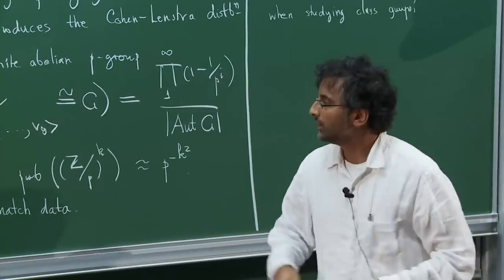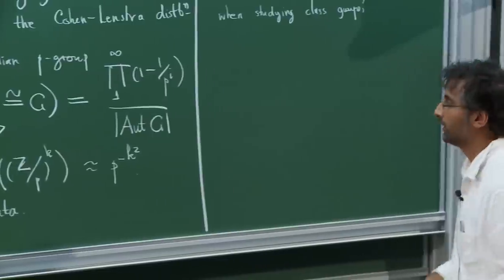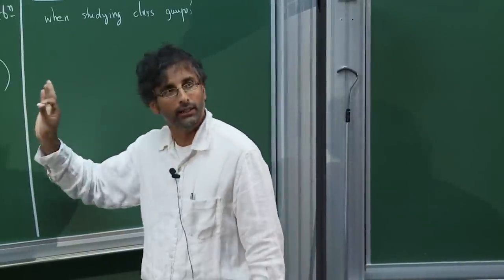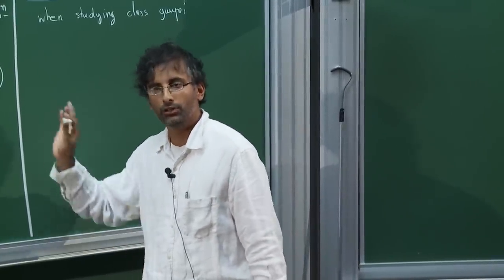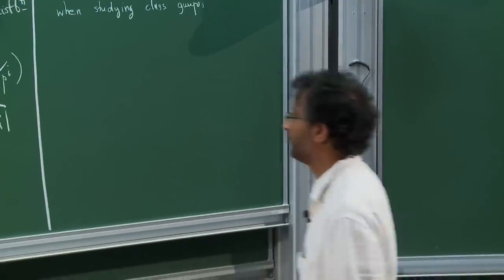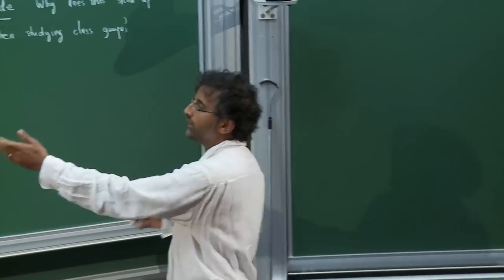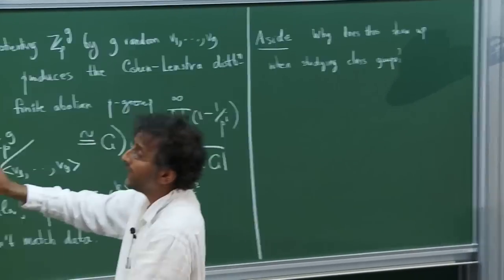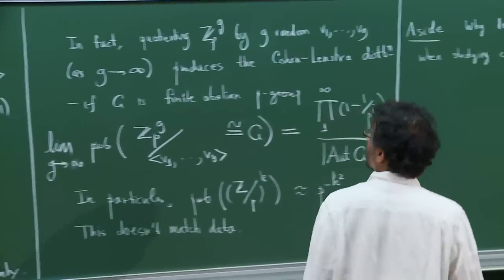As long as g is slightly more than the number of generators of G, this is already very close. The proof is an elementary exercise in algebra — not much harder than knowing the number of invertible matrices over F_p. So why should the same distribution show up in studying class groups?